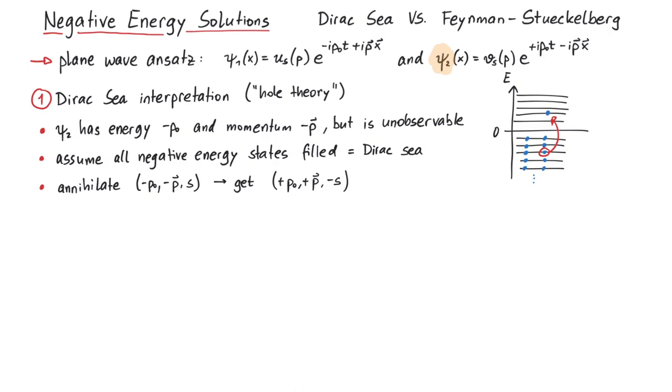In summary, this interpretation assumes the Dirac-Sea, which is a collection of an infinite number of unobservable negative energy states. If we want to observe one, we have to annihilate the corresponding state and get a state of flipped properties.